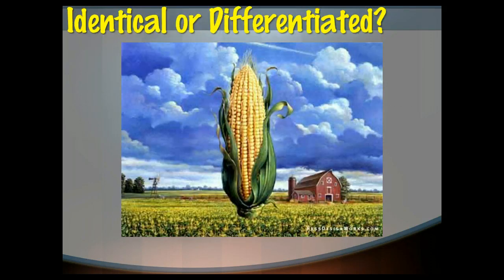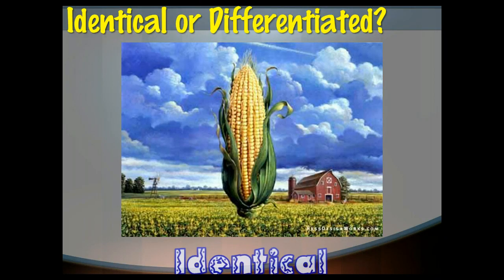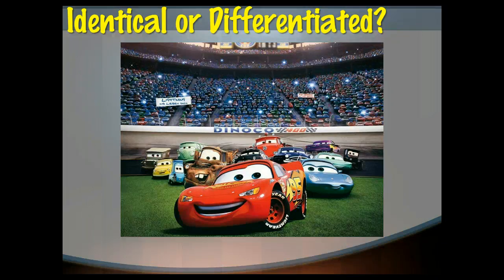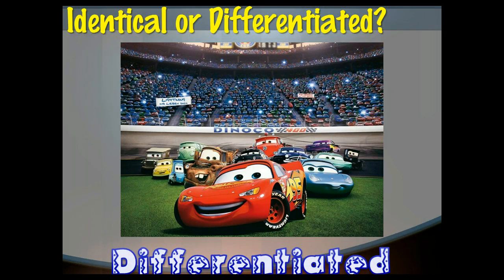So when it comes to identical versus differentiated, it's does the producer create something that is substantially different than some other producer? So in the case of corn, one farmer's corn is another farmer's corn, so we would say that's an identical product. Whereas cars, on the other hand, are different. Some are trucks, some are sedans, some are electric, some are hybrid, some are red, some are blue, some have leather seats, some do not. And so all of these cars are strongly differentiated and different from each other.